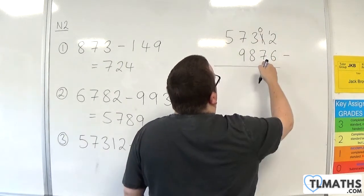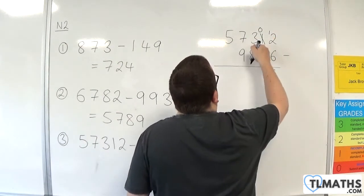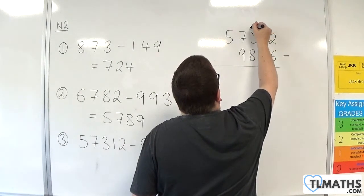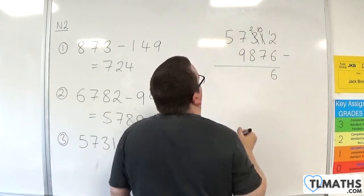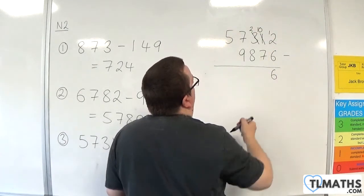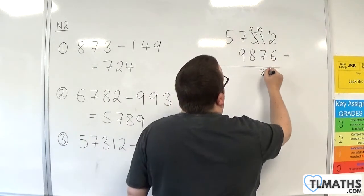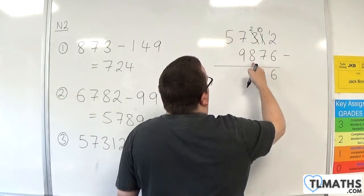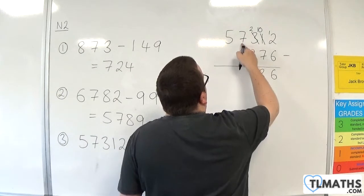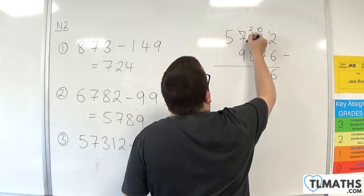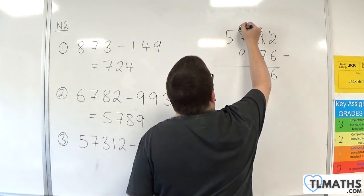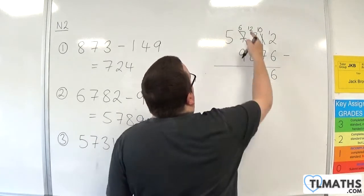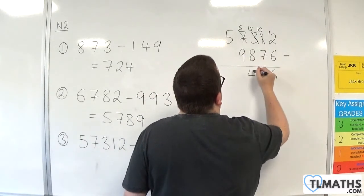0 take away 7 — I can't do, so I need to borrow 1 from the 3. I cross through the 3, it becomes 2, and the 0 becomes 10. 10 take away 7 is 3. 2 take away 8 — I can't do, so I need to borrow from the 7. The 7 becomes 6, and the 2 becomes 12. 12 take away 8 is 4.